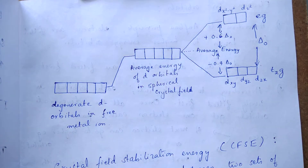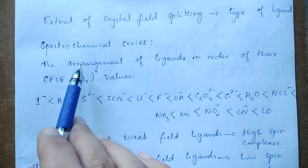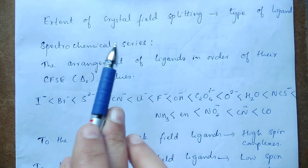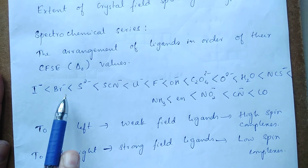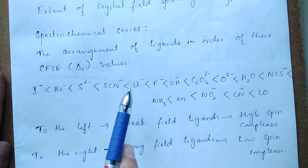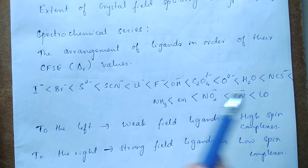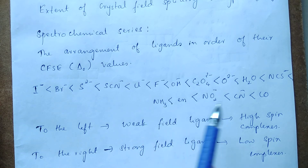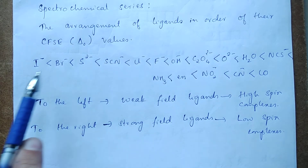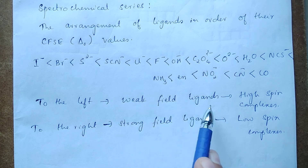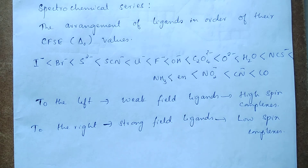The extent of crystal field splitting depends on the type of ligand. There is an experimentally determined arrangement of ligands in order of their crystal field stabilization energy called the spectrochemical series: I⁻ < Br⁻ < S²⁻ < SCN⁻ < Cl⁻ < F⁻ < OH⁻ < oxalato < H₂O < NCS⁻ < NH₃ < en < NO₂⁻ < CN⁻ < CO. Ligands on the left produce smaller crystal field splitting and are called weak field ligands; those on the right produce larger splitting and are called strong field ligands.